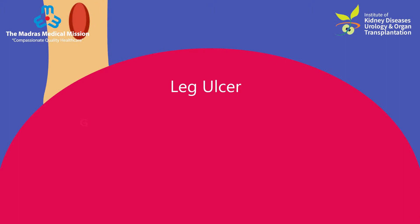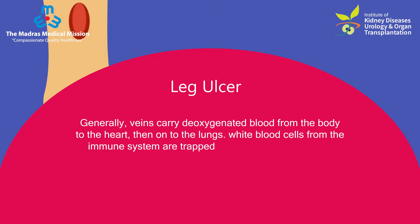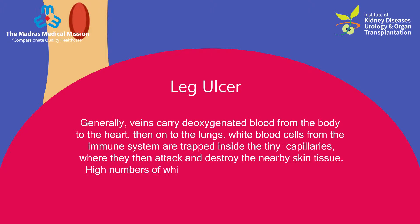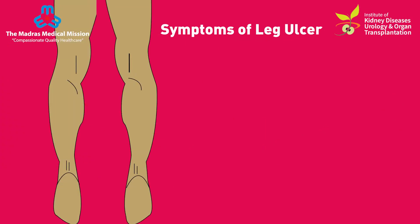In a leg ulcer, veins carry deoxygenated blood from the body to the heart and then onto the lungs. White blood cells from the immune system are trapped inside the tiny capillaries, where they attack and destroy the nearby skin tissue. High numbers of white blood cells and their by-products have been found in the pus of leg ulcers.